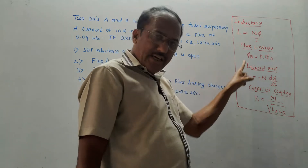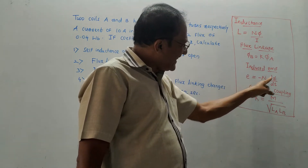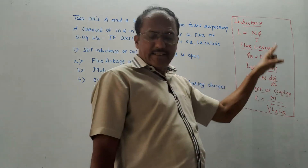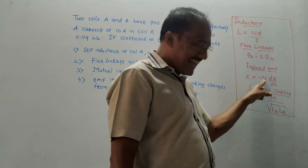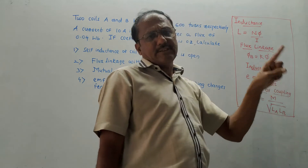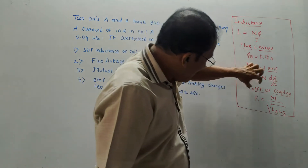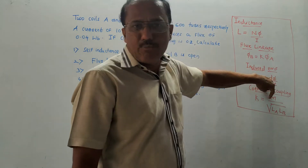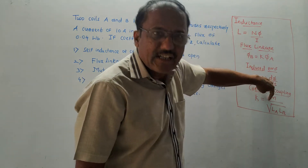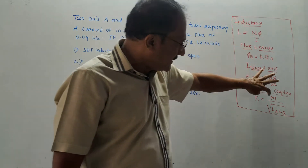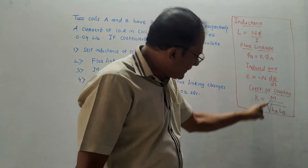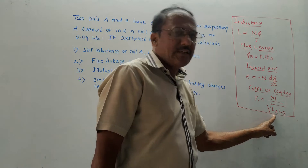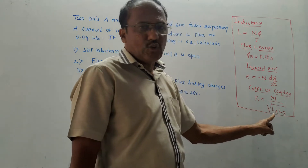The induced EMF is E = −N × dφ/dt, where N is the number of turns and dφ/dt is the rate of change of flux. The coefficient of coupling K is given by M divided by the square root of LA × LB, where M is mutual inductance and LA, LB are the self-inductances of coils A and B respectively.